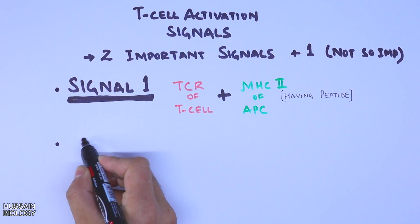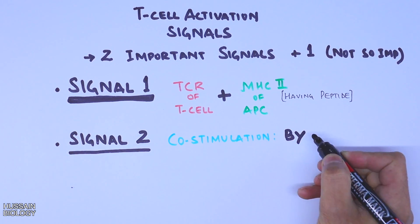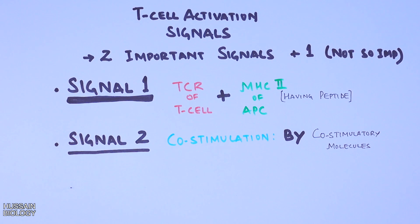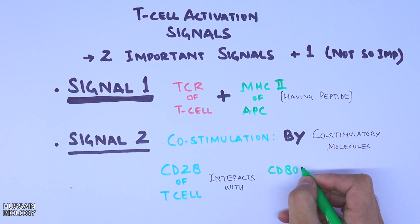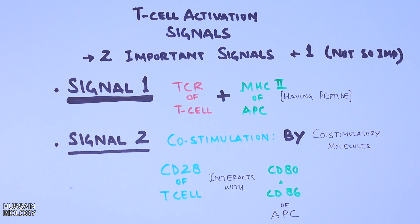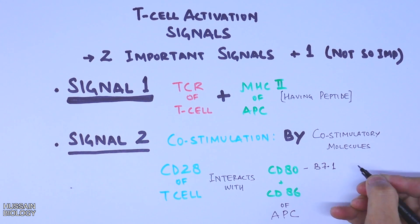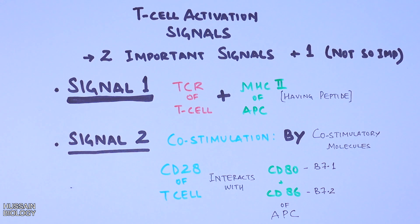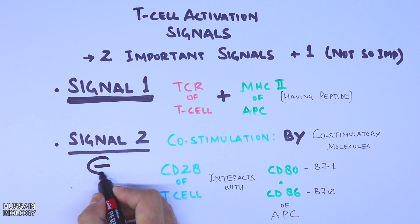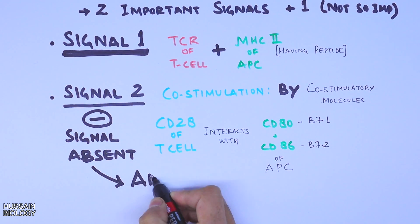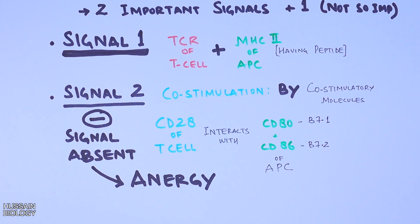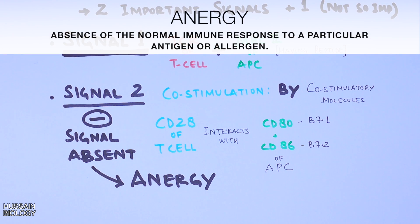The second signal is in the form of co-stimulation by co-stimulatory molecules, such as CD28 of the T cell interacting with CD80 or CD86 of the APC. Both CD80 and CD86 are from the B7 group of proteins. It must be noted that if this co-stimulatory signal is absent, the cells go into anergy. So this second signal saves the cell from entering an anergy state.